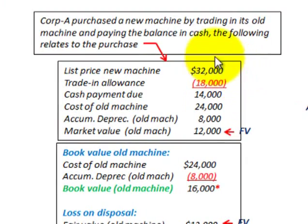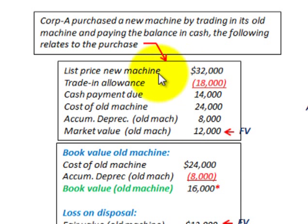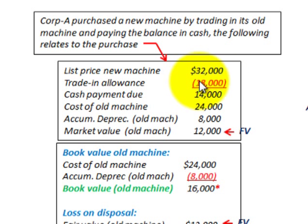So Corporation A purchased the new machine by trading in its old machine and paying the balance in cash. We're going to have a list price of our new machine, and then we're going to have a trade-in allowance — that's the allowance given for trading in the old machine, what they're saying the old machine is worth on the trade-in. The difference between our list price and our trade-in allowance gives us the cash payment that would be due.